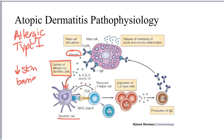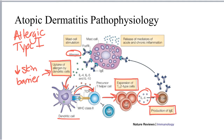Once the allergen is processed by dendritic cells, it is presented to helper T cells where it activates a response mediated primarily by the Th2 subtype of T cells. This expansion and differentiation of Th2 T cells results in the release of interleukin-4 as well as significant production of the immunoglobulin IgE by B cells. This IgE then results in sensitization where it crosslinks on the surface of mast cells, and the next time that allergen is introduced, there is release of inflammatory mediators and significant mast cell stimulation, resulting in an allergic reaction.